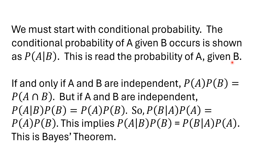This is the probability of A given B. If A and B are independent, the probability of A times the probability of B equals the probability of the intersection of A and B. If A and B are independent, the probability of A given B times the probability of B is the probability of AB. Because if A and B are independent, A doesn't depend upon B, so it just becomes the probability of A. Also, the probability of B given A times the probability of A is the probability of A times the probability of B.